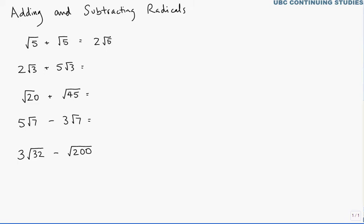If this is at all confusing, you can think of √5 as an object or a variable, right? If you had x + x, you would have 2x. If you have 7 + 7, you have 2 times 7.